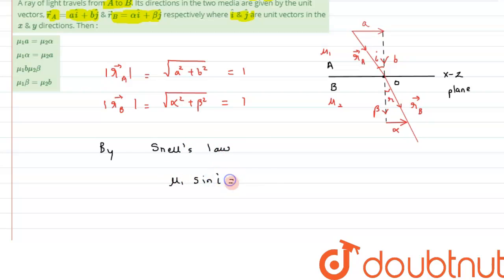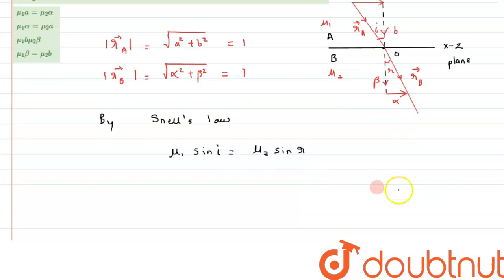mu1 sin i equals to mu2 sin r. All right, so from here we can write mu1 as it is, sin i from the diagram we can say it is nothing but opposite upon hypotenuse, that is opposite is a.